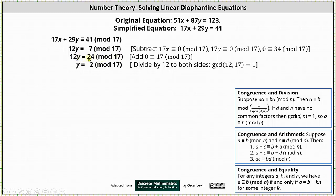Just remember, when dividing, we also have to divide the modulus of 17 by the greatest common divisor of 12 and 17, which in this case is just 1. To simplify: we divide 12y by 12, which gives us y. We divide 24 by 12, which gives us 2. We divide 17 by 1, which doesn't change. We still have mod 17.